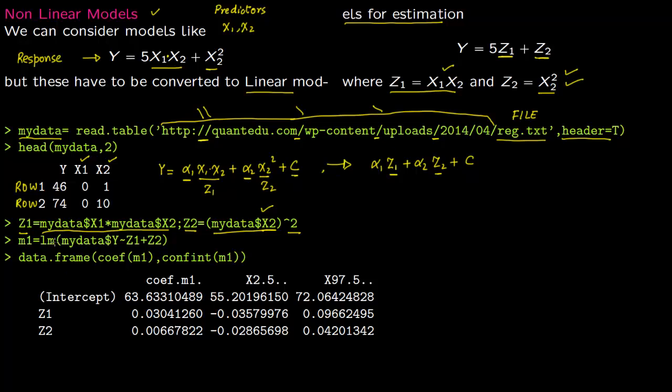And now there is your model. Linear model, you're fitting Y. Y in mydata to Z1 plus Z2. This Y is fitted to Z1 and Z2. And then you have this data frame which will give you the coefficients and the confidence interval.